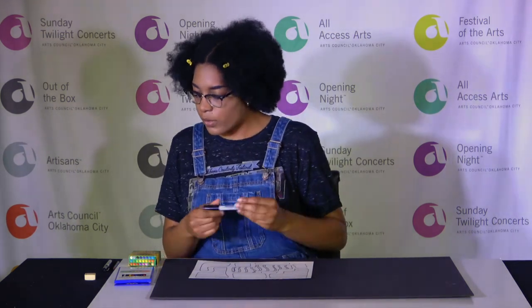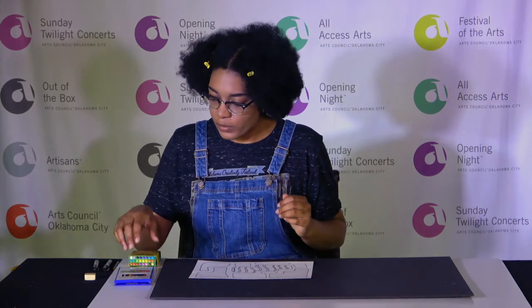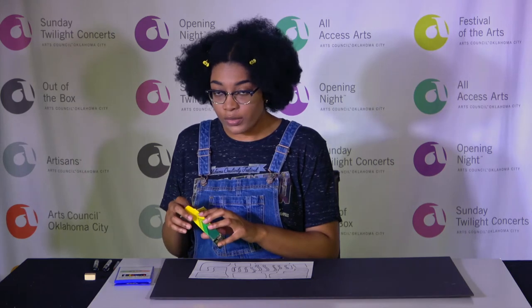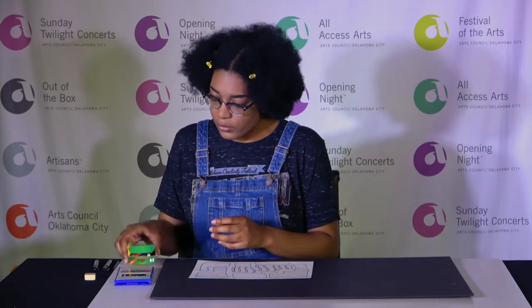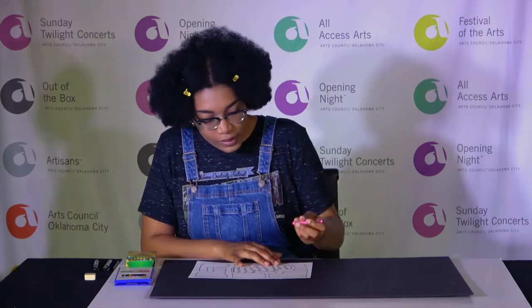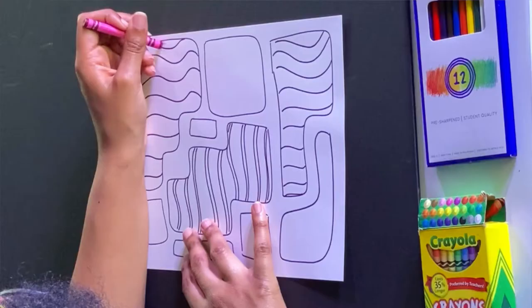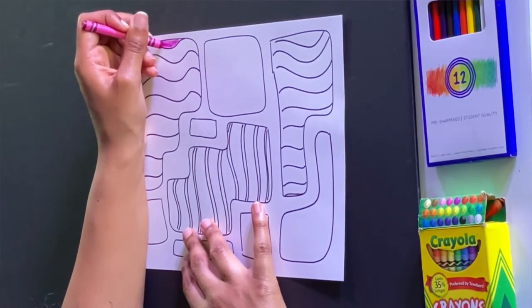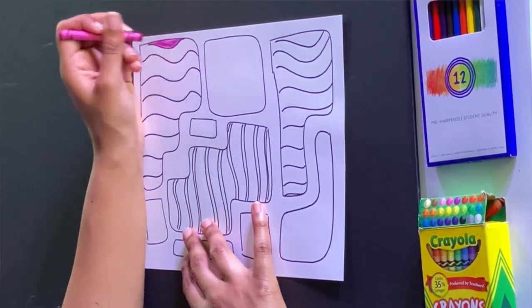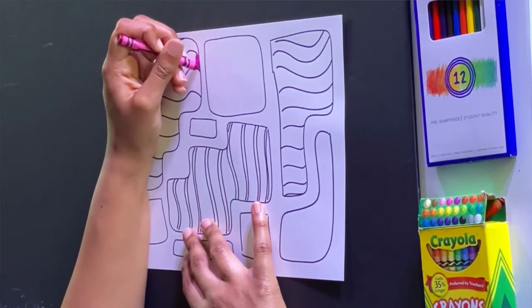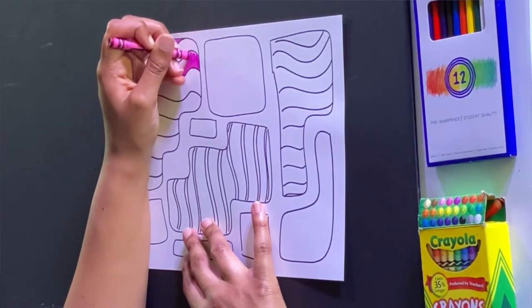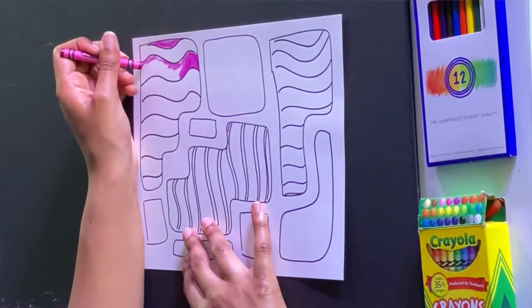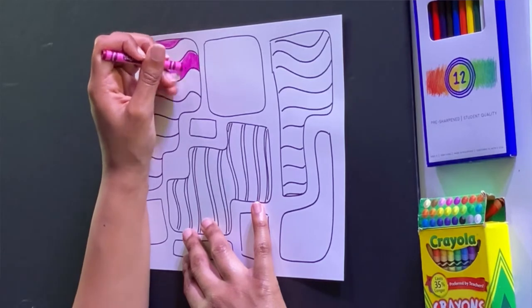So those are my patterns. Those are my shapes. And I'm going to jump in with my color here. You can use whatever colors you like. You can use random colors. You can use a whole color scheme. Whatever you think. It doesn't have to be landscape colors. You don't have to stick with blues and greens and browns. You can get into reds and other colors. There's no set rules on how you have to be inspired by landscapes.